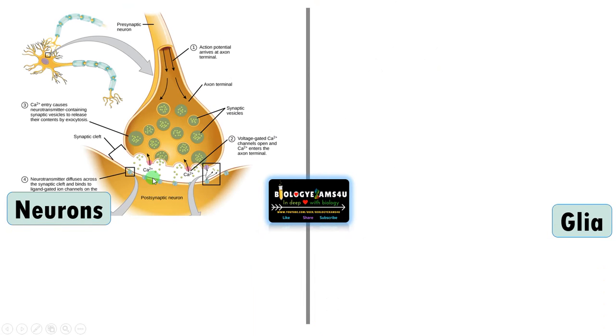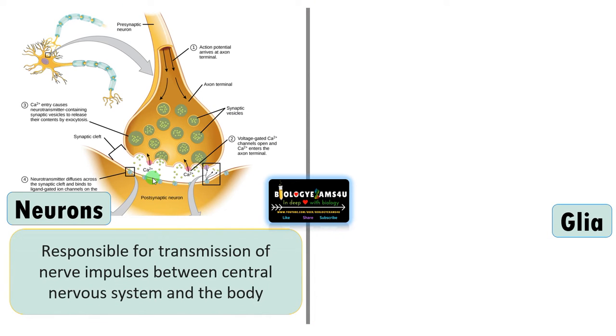The second difference is regarding function. Neurons are responsible for transmission of electrical impulses, or nerve impulses, between the central nervous system and different parts of the body.